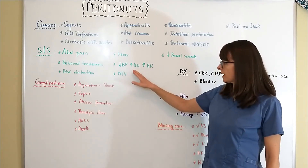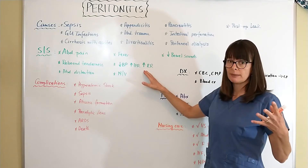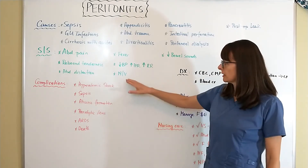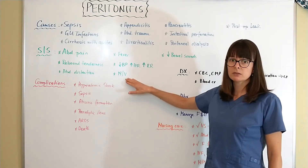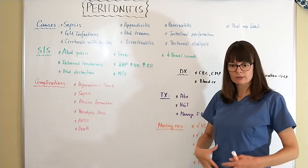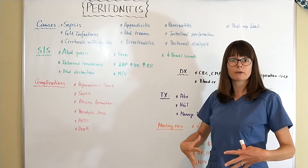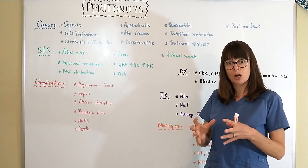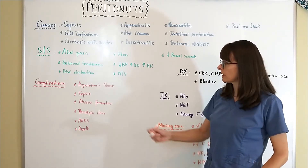The patient will certainly have a fever and may become shocky with hypotension, tachycardia, and increased respiratory rate, because peritonitis can lead to sepsis — this is a significant infection the body is fighting. As with any abdominal disorder, nausea and vomiting can be associated signs and symptoms. There will also be decreased bowel sounds, as the peritoneum fills with fluid, leaving less room for the intestine to function normally.